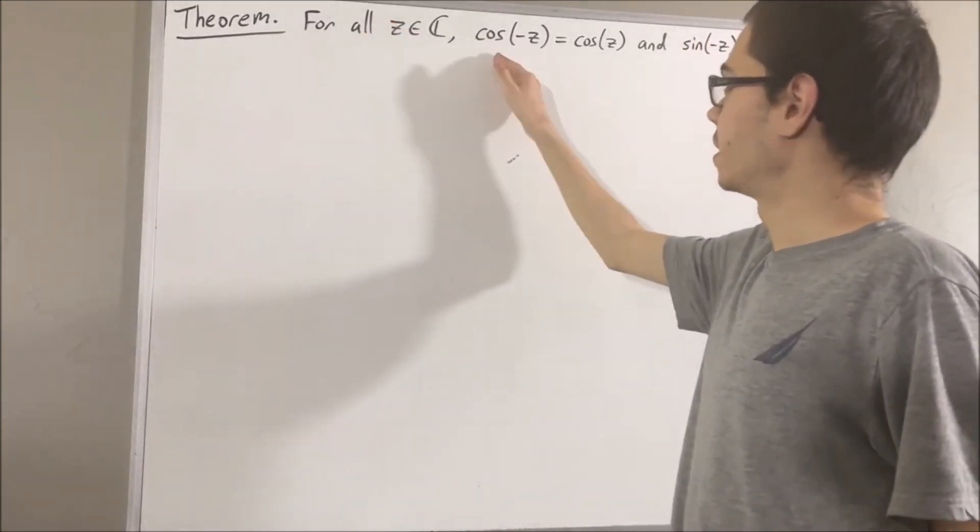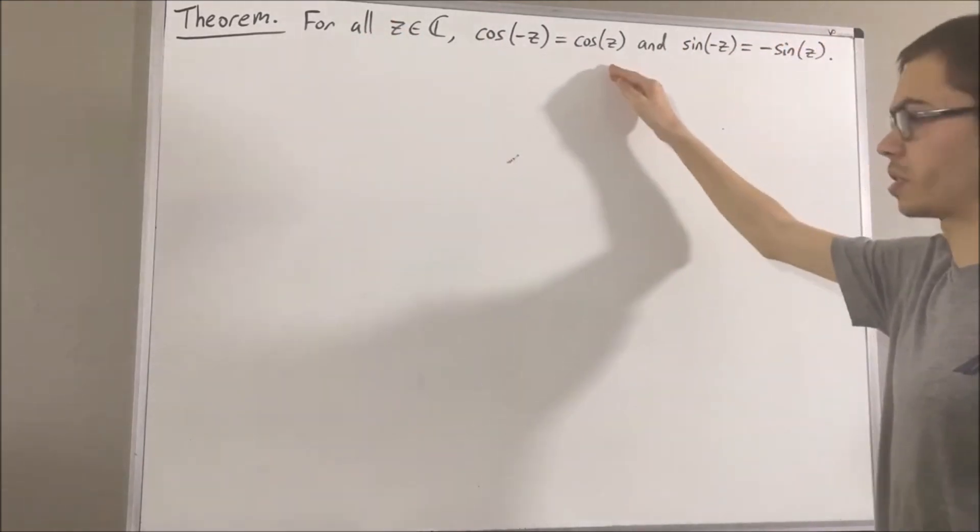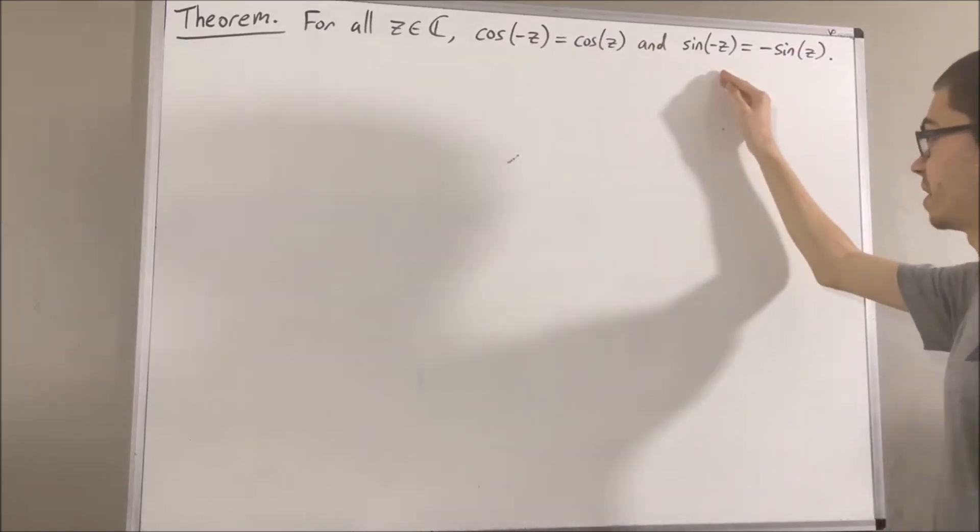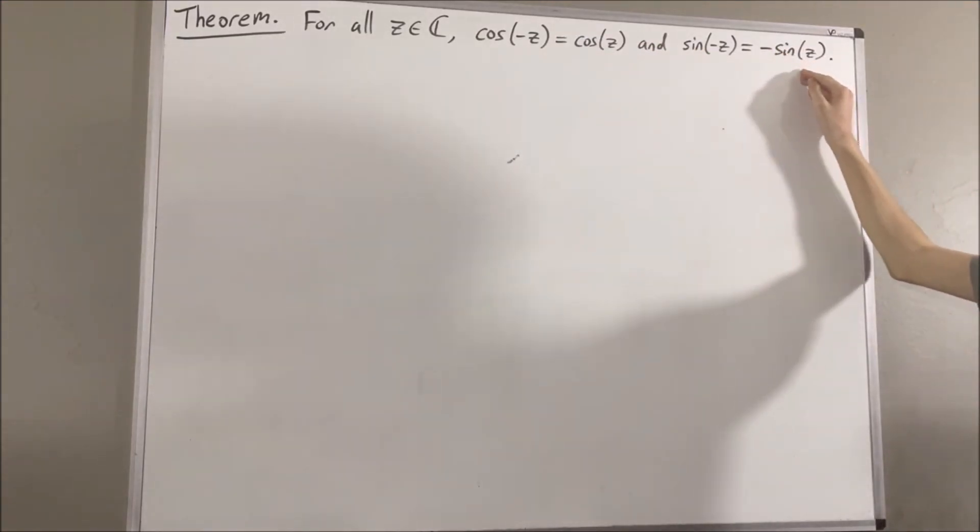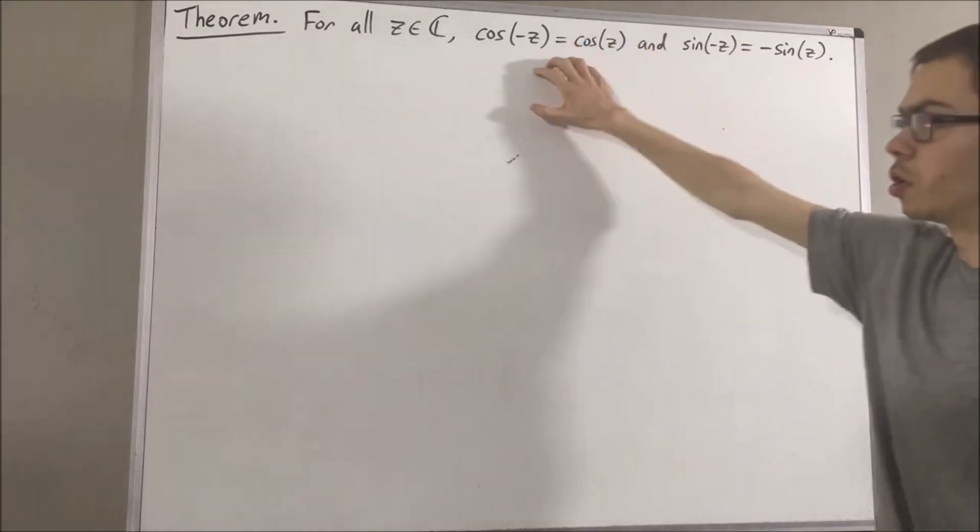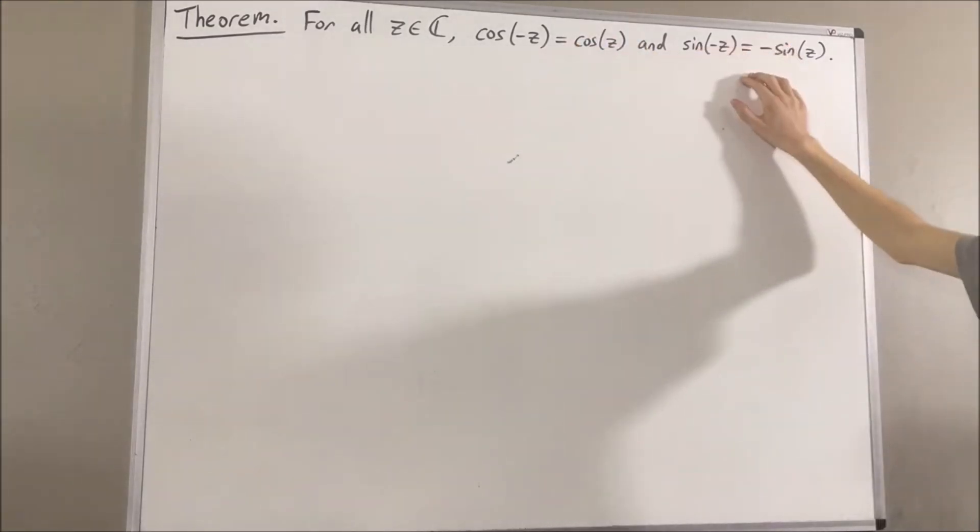For all complex numbers z, the cosine of negative z is equal to the cosine of z, and the sine of negative z is equal to the negative sine of z. In other words, cosine is an even function, sine is an odd function.